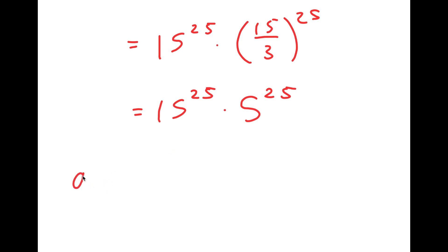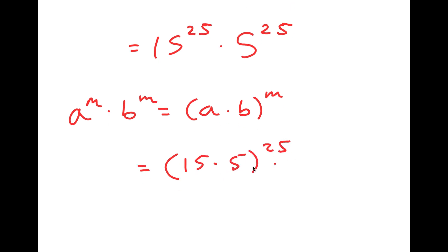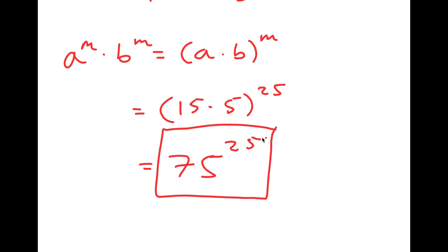Now, another property of exponents is that a to the power of m times b to the power of m is equal to a times b to the power of m. So this is going to equal 15 times 5 to the power of 25, which is equal to 75 to the power of 25. So this is my answer.